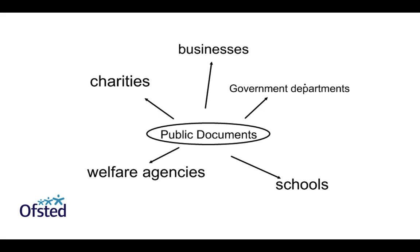There are two types of documents: public and personal. Public documents are any text released by an institution or the government. For example, when Ofsted observes schools and releases a report, that is a public document. Government departments like the Department for Education or Ministry of Justice also release reports — long documents made up of mainly qualitative data. Charities release public documents too, such as promotional material.